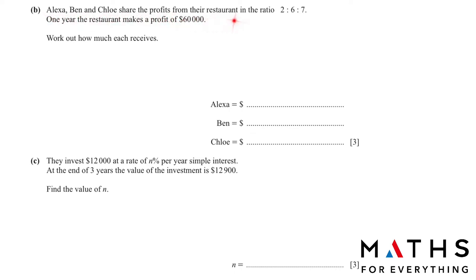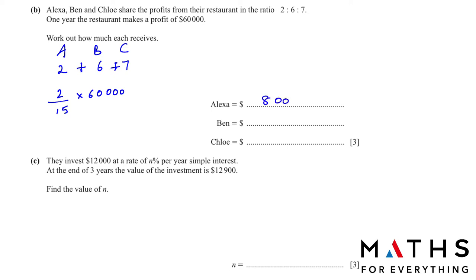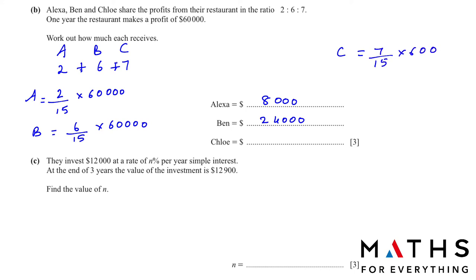Alexa, Ben and Chloe share the profits from the restaurant in the ratio 2:6:7. The restaurant makes a profit of $60,000. Total parts are 2+6+7=15. For Alexa: 2/15 × 60,000 = $8,000. For Ben: 6/15 × 60,000 = $24,000. For Chloe: 7/15 × 60,000 = $28,000.